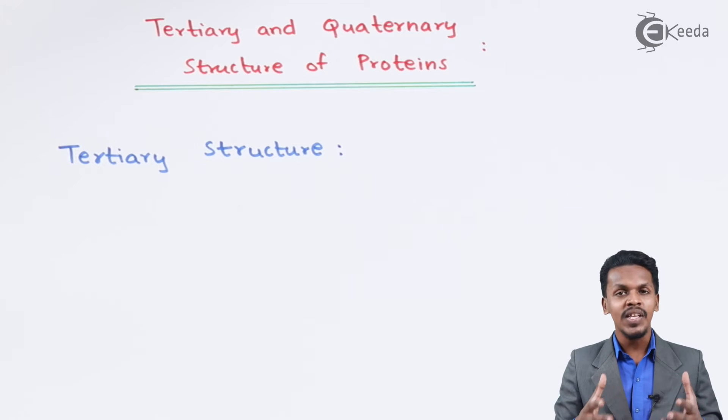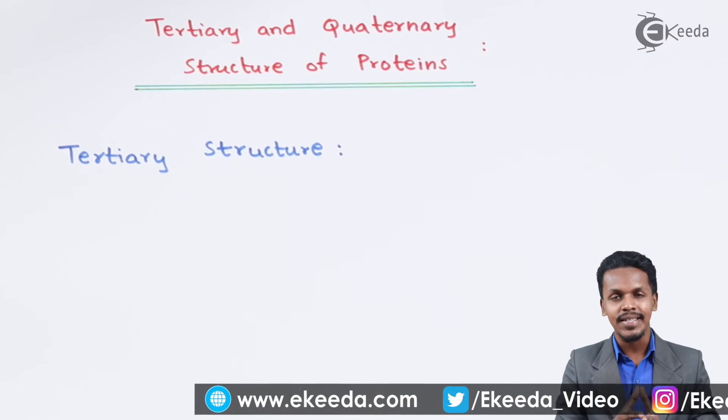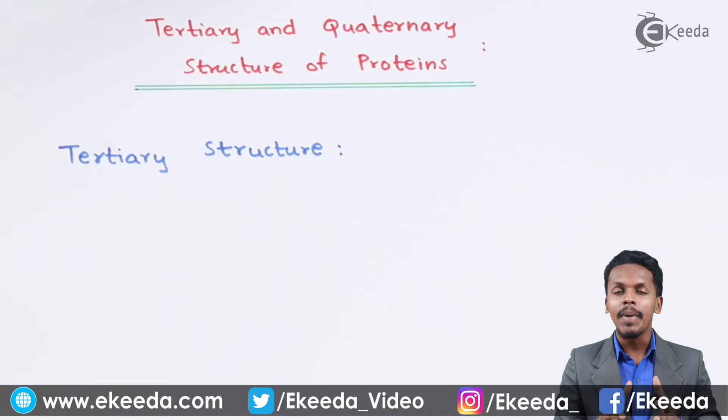As we understand, proteins are polymers of amino acids and they consist of peptide linkage. This kind of polypeptide molecules is what is called protein. They can form various structures.